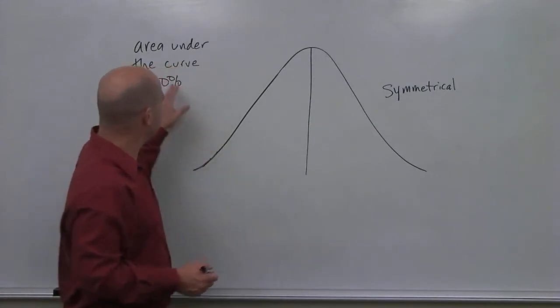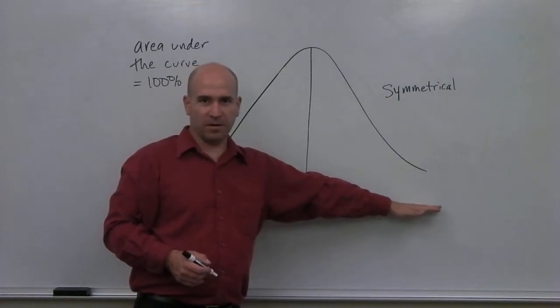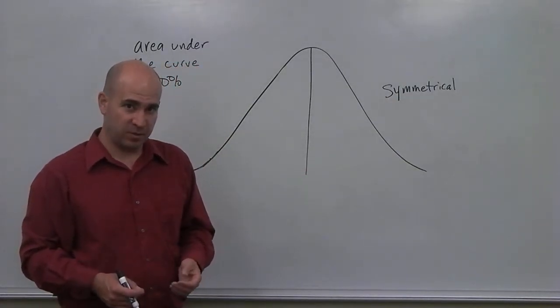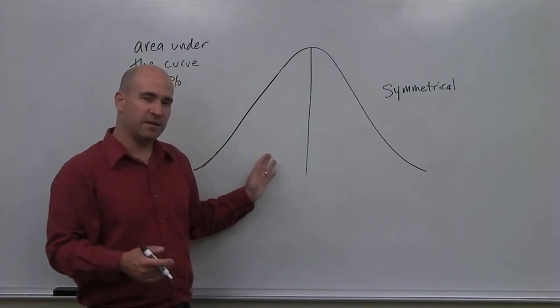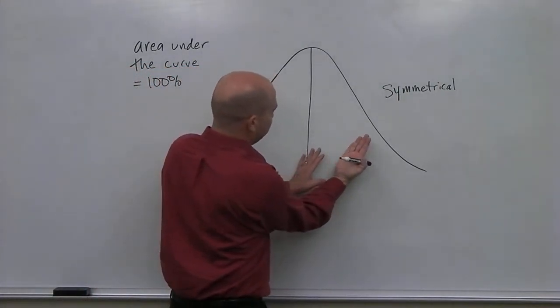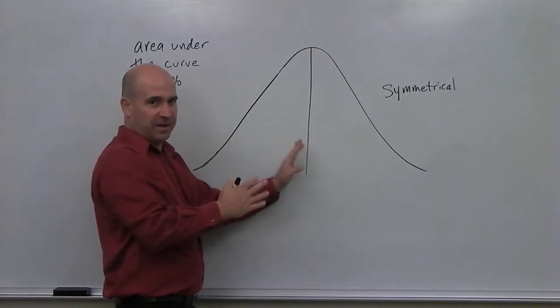Now, if I take my percentage form here, 100% under the entire curve, and if I know that the normal distribution is symmetrical, or one side is the mirror image of the other, another way to think about this is, if I took this side and folded it over here, it would fit perfectly.